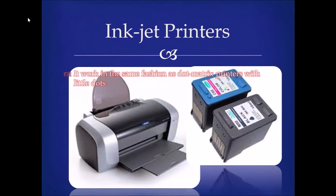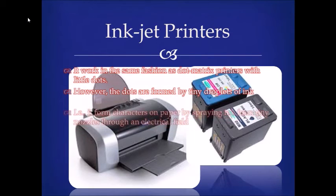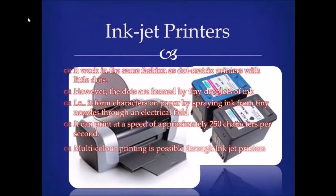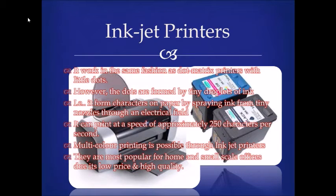Inkjet printer. It works in the same fashion as dot matrix printers with little dots. However, the dots are formed by tiny droplets of ink — that is, it forms characters on paper by spraying ink from tiny nozzles through an electrical field. It can print at a speed of approximately 250 characters per second. Multicolor printing is possible through inkjet printers. They are most popular for home and small-scale offices due to their low price and high quality.